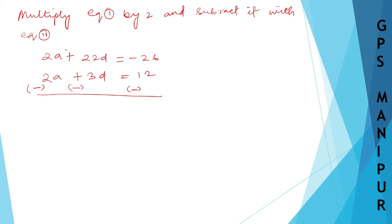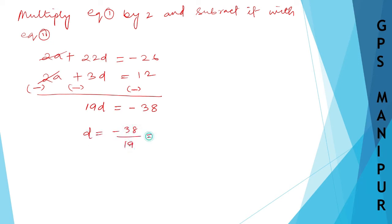2A cancels with 2A. 22D minus 3D is 19D. Minus 26 minus 12 is minus 38. So D equals minus 38 divided by 19, which equals minus 2. We got the value of D is minus 2.